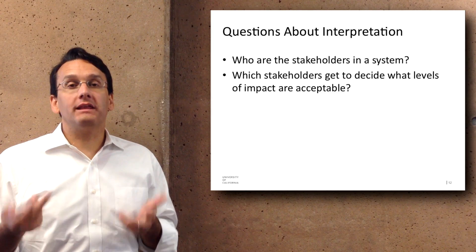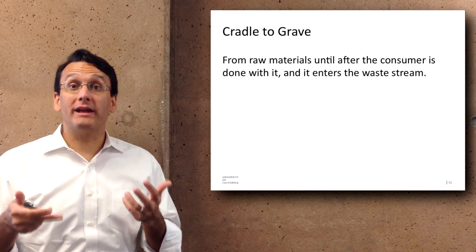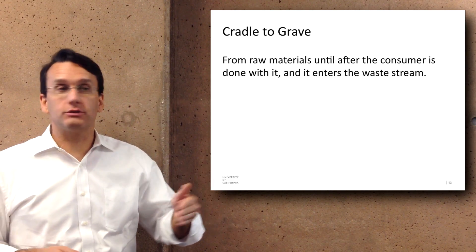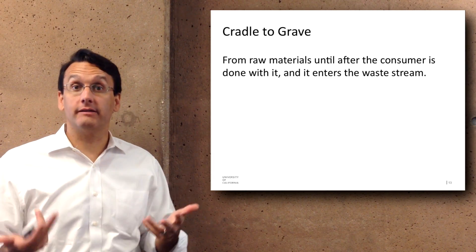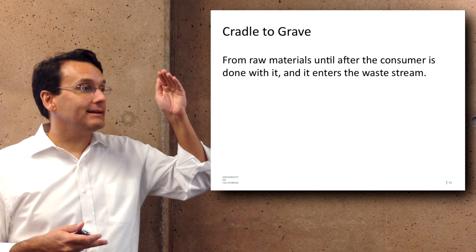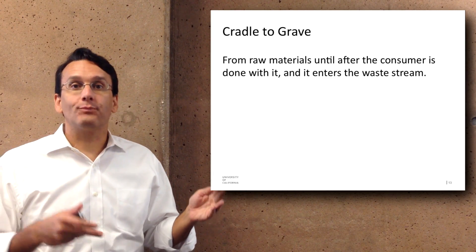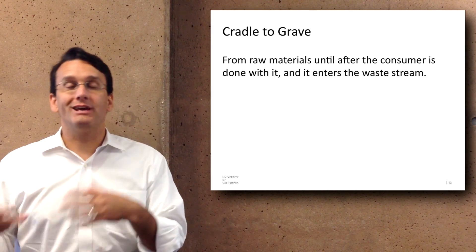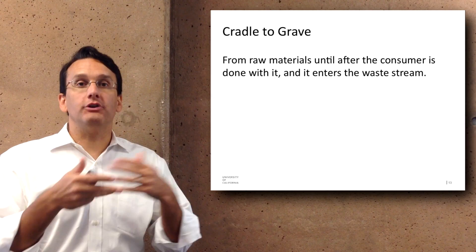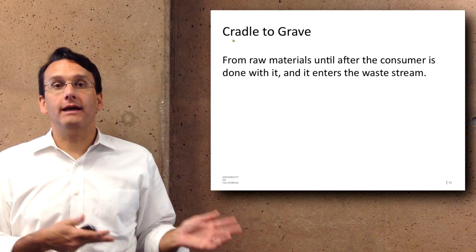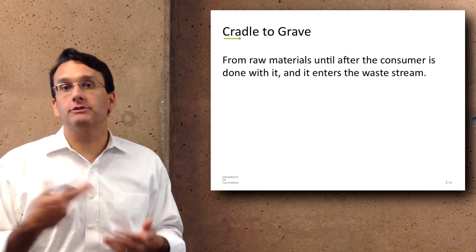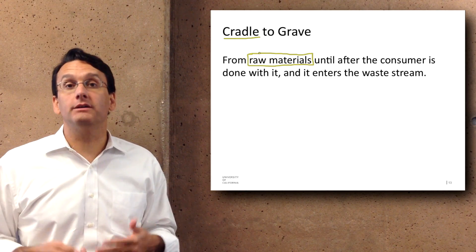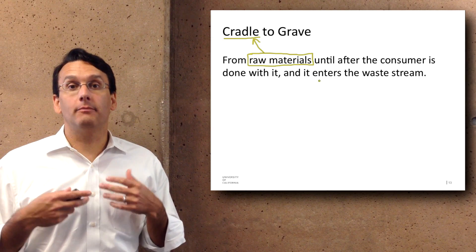One way to think about the impact of different products is called cradle to grave — looking at a product from the moment that its raw materials are dug out of the earth. These raw materials are transformed and made into a consumer product, which is then used, eventually put in the trash, and enters the waste stream going to a landfill or being recycled. This process — from the beginning to the end of its movement through the production cycle — is called cradle to grave.